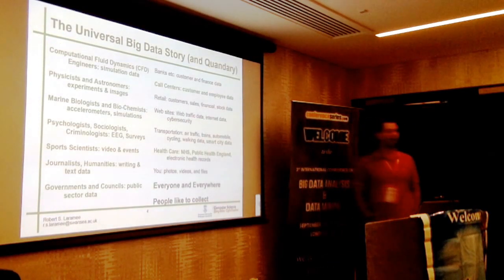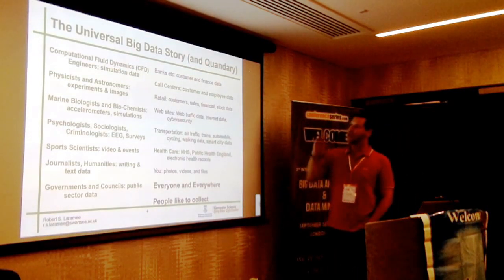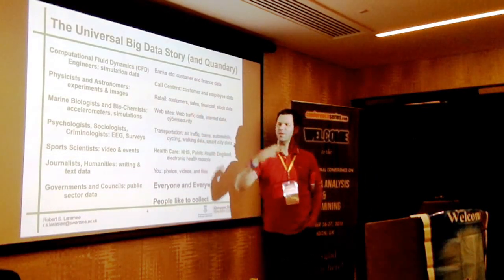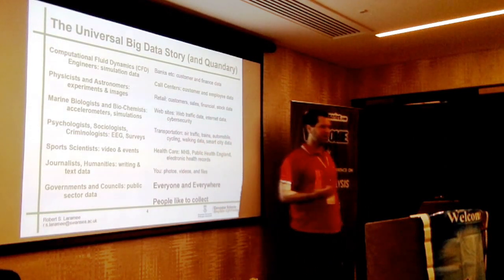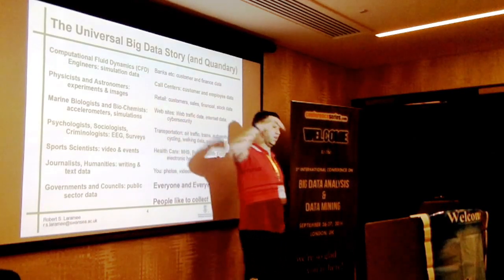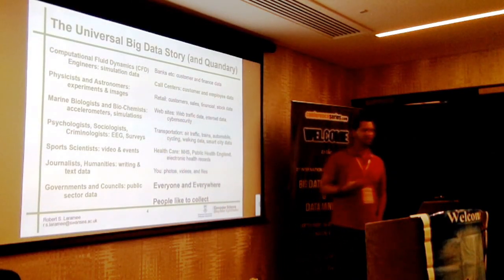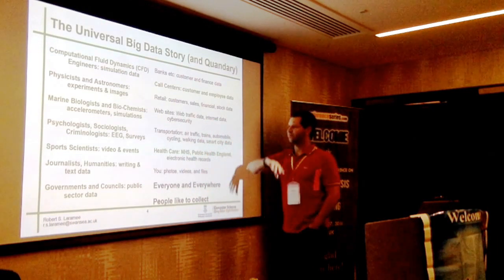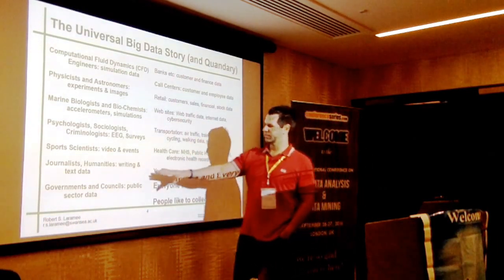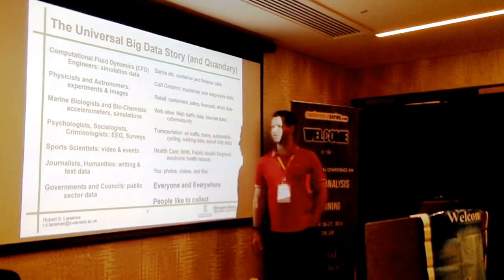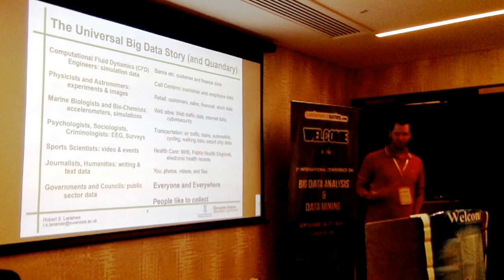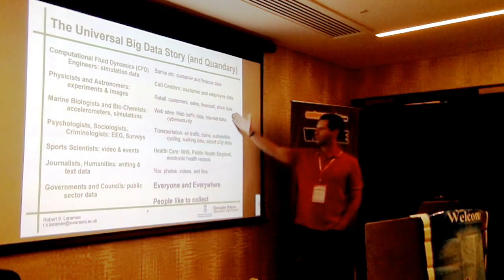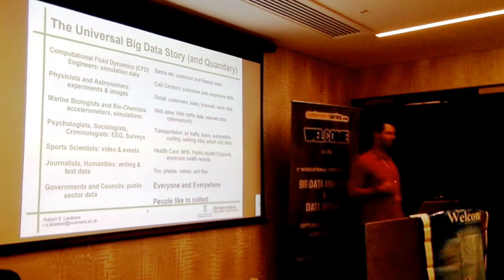We can see data chaos everywhere — it doesn't matter where we look. We can see it in computational fluid dynamics, with physicists and astronomers facing these dilemmas. It's not possible to study all the stars and black holes physically. We see this with marine biologists, biochemists, psychologists, sociologists, sports scientists, journalists, humanities researchers, governments, councils, banks, call centers, retail, websites, and transportation. The list is endless.